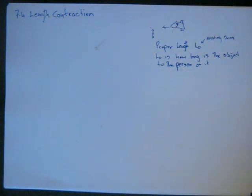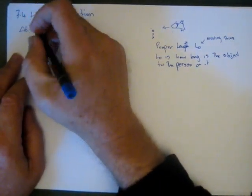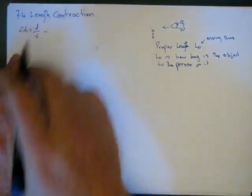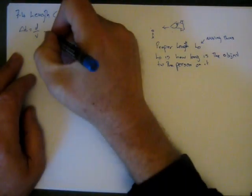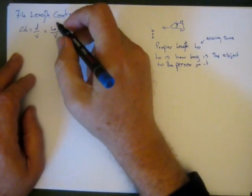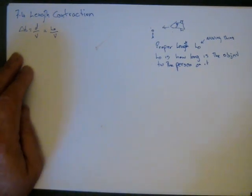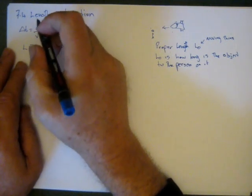So how can we work out how long this spaceship is? Remember we've got change in time equals D over V. And remember the change in time itself is being modified due to the relativistic effect. That's equal to the length of the object divided by whatever the velocity is.